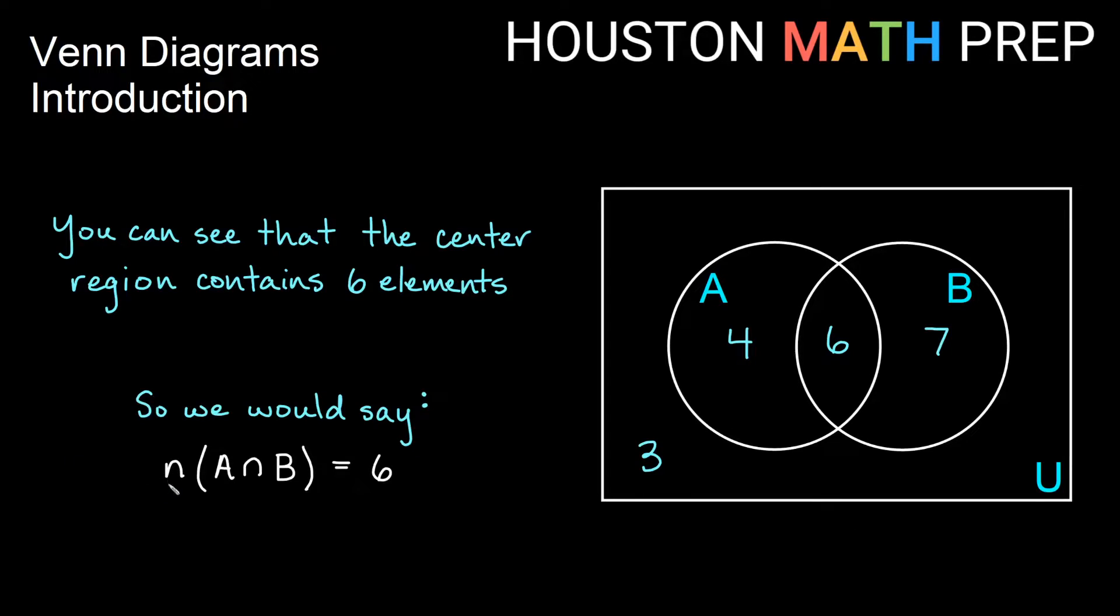Now, if I want to say the number of elements in that region, then I can use a little n. So we have a lowercase n and then parentheses. This reads the number of elements in the intersection of A and B. And we would say the number of elements in A intersect B here is six. That's where they overlap. So these six objects are in A and they are in B.